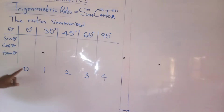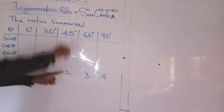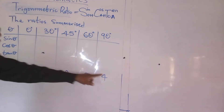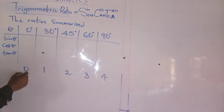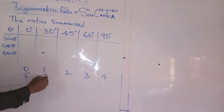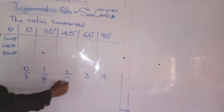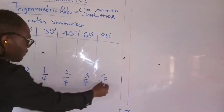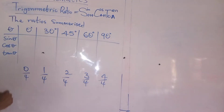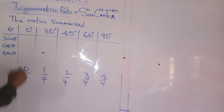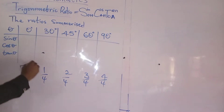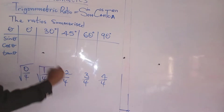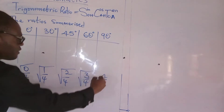At this point, I will represent this to be 0, 1, 2, 3, 4. What I will do, I will divide it by 4, divide it by 4, divide it by 4, divide it by 4, divide it by 4. And finally, I will square it, square everything, square everything.